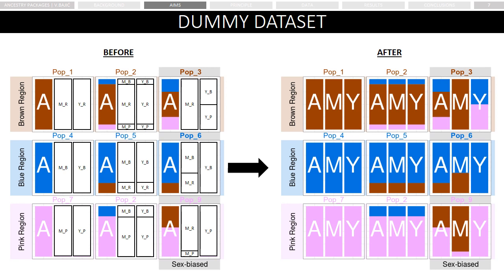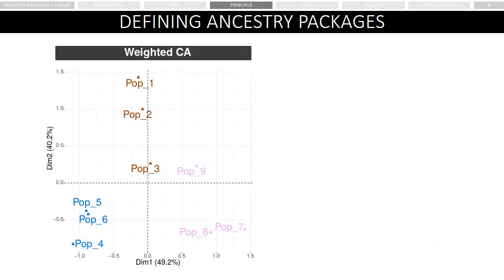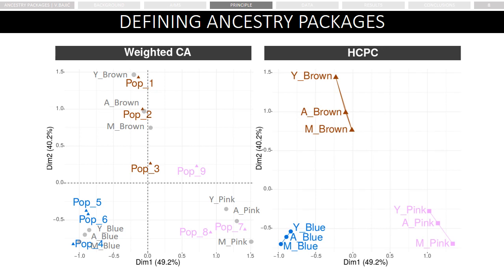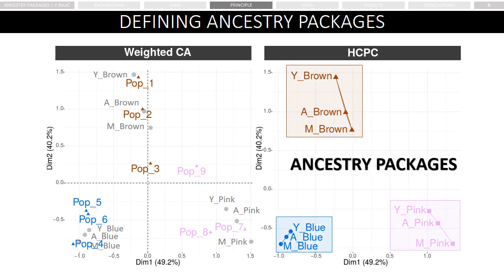To demonstrate the approach, let's focus on this dummy dataset that contains nine populations from three different geographic regions: pink, blue, and brown. In each of the regions, the last population is constructed to be a product of sex-biased gene flow. By performing weighted correspondence analysis on the frequency estimates of all three types of markers, we can represent population relationships accounting for all markers in a single graph. We then use the output of correspondence analysis to perform hierarchical clustering on principal components, in order to infer clusters of highly associated uniparental lineages and autosomal ancestry components, which I termed Ancestry Packages.